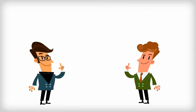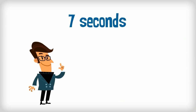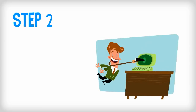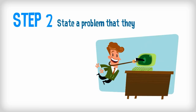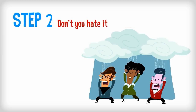Once you've connected with your viewer, you basically have seven seconds to capture their attention before they go and click on something more interesting. This is step number two. The best way to hook someone's attention is by stating a problem that they're experiencing. It can be as simple as saying, isn't it frustrating when, or don't you hate it when, and fill in the blanks.